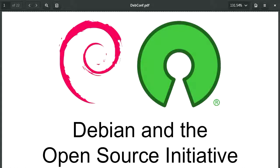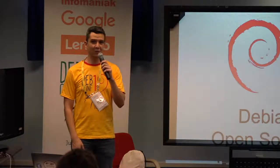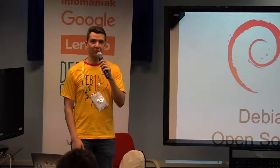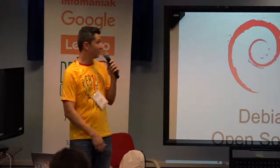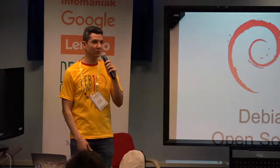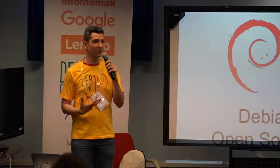Hello everyone. I'm Nick Vidal. I work with the OSI, which is the Open Source Initiative. We have a long history together with Debian. One of the main core leaders of Debian 20 years ago was Bruce Perens. He helped define what's open source — he wrote the Open Source Definition. So we really have a good history together.